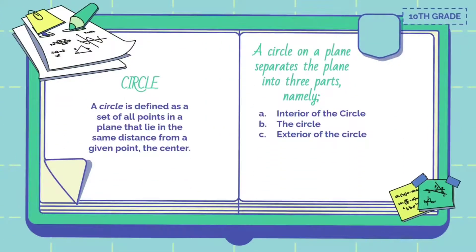What is a circle? A circle is defined as a set of all points in a plane that lie at the same distance from a given point — the center.